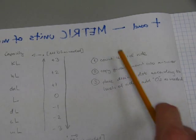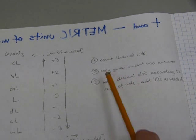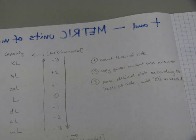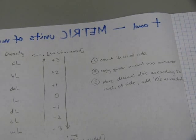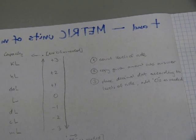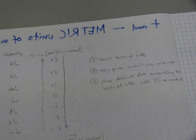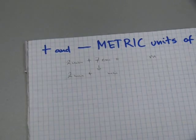And these are the three steps. We're going to count the levels of ride. We're going to copy the given amount into the answer. And then we'll place the decimal dot as needed according to levels of ride. So, going back to the original problem.